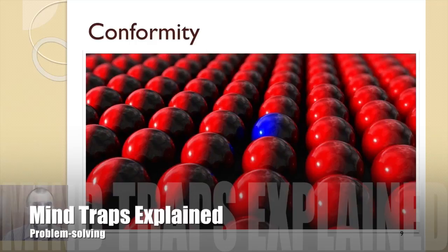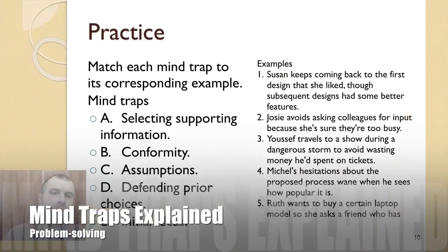The conformity trap can impact every step of the problem solving model, but it's likely to affect the fourth and sixth step mostly. In a group, everyone else's support for a particular solution may convince you or even pressure you to support it. And you will be a supporter too. And when it comes time to evaluate the success of the solution, the group may have a vested interest in reaching a positive conclusion.